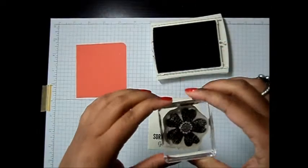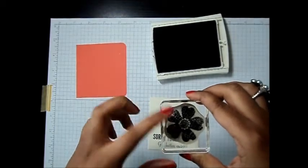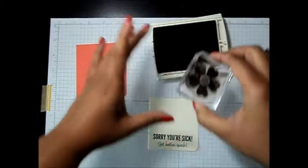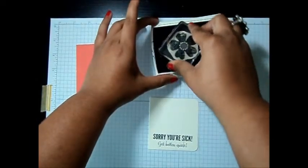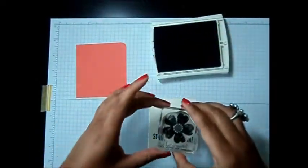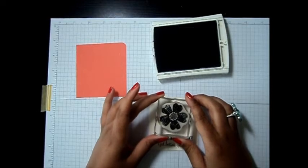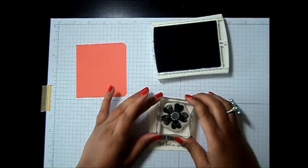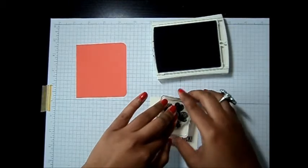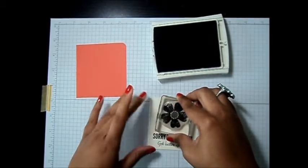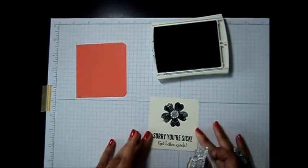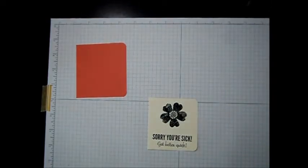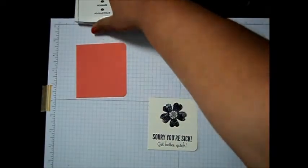And then I'm going to bring out my flower from the Flower Shop stamp set. And I'm just going to ink that up also in Basic Black. And let's see. Put that kind of right here in the center. That should be good. Okay, looks good. I like this flower. It's a very cute flower.